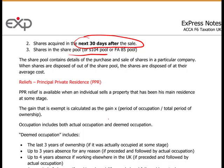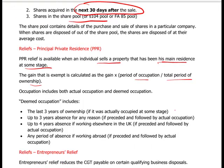Principal Private Residence relief is available for all individuals who sell a property that has been their main residence at some stage. The exempt gain is calculated as: total gain × period of occupation / total period of ownership. If you live in a house your entire life and then sell it, there will be no capital gains tax. There is also a concept of deemed occupation — the last three years of ownership are always treated as if you lived there, even if you didn't, as long as you actually occupied the property at some point. So it's advisable to move into a property for at least a few days to qualify for this three-year rule.